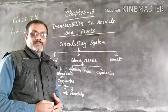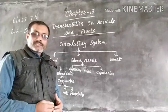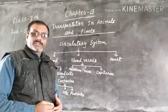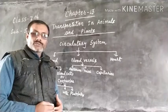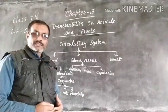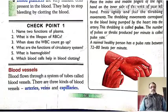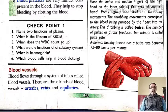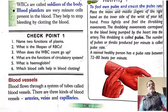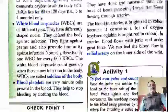Now about them we can know in detail through our book. So let's start reading and try to know more about them. Blood flows through a system of tubes called blood vessels. There are three kinds of blood vessels: arteries, veins, and capillaries.